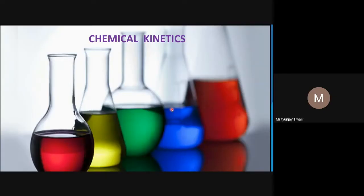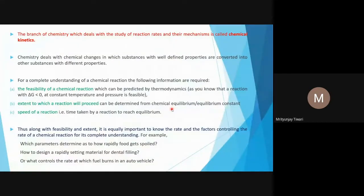Hello students, good morning. We have started a new chapter, and in the last lecture I gave an introduction to chemical kinetics — where it is used, why we need information about the rate of chemical reactions, and what the different steps of chemical reactions are. There could be reactions which happen in one step, but such reactions are very few. Most reactions happen in more than one step, and those are called complex reactions.